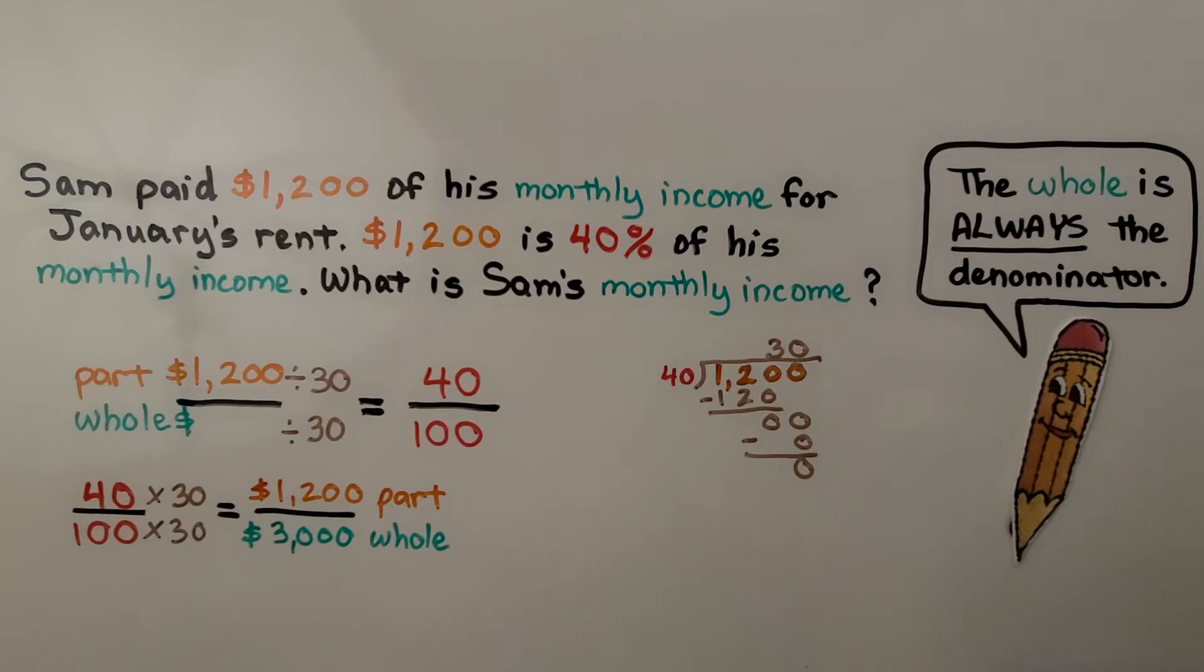Well, that tells us he makes $3,000 as the whole. That's what his monthly income is. Remember, the whole is always the denominator.